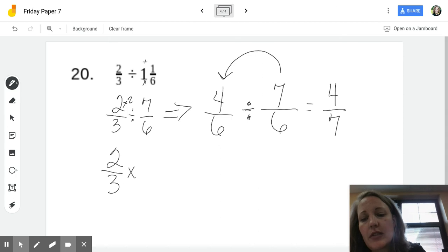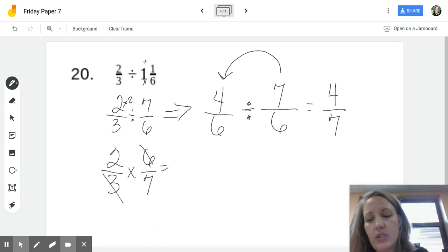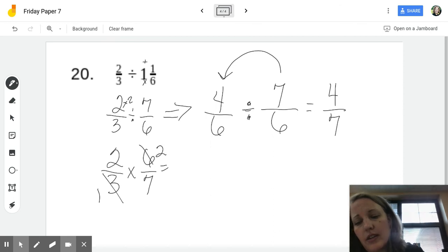Two thirds times, and then let's go ahead and we're going to flip this second fraction. Okay, that's the keep change. And then we flip 6 over 7. Okay, 3 and 6 have a common factor. It is 3. 3 divided by 3 is 1, and 6 divided by 3 is 2. 2 times 2 is 4, and 1 times 7 is 7. See?